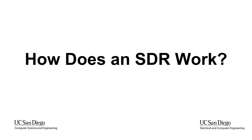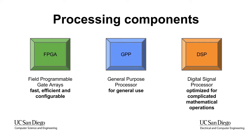How does a software-defined radio work? These are some of the processing components. An FPGA, in layman's terms, is a programmable hardware. A GPP is a general-purpose processor for doing various general operations. A DSP is a digital signal processor, which is useful for doing mathematically intensive operations.